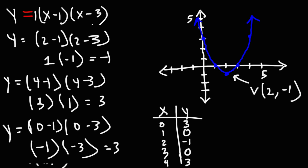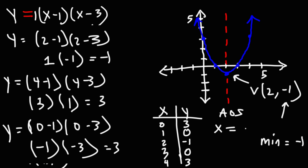The minimum value for this quadratic function is the y-coordinate of the vertex, so the minimum value is negative 1, located at x equals 2. The axis of symmetry is the line that passes right through the vertex. The AOS, axis of symmetry, is an x value — it's x equals h, or x equals 2, which is just the x-coordinate of the vertex.